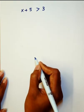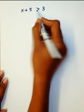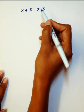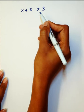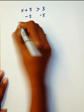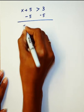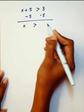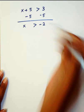If it was equal to here, how would you solve this equation? You apply the exact same rules. You would do, oh, I have to subtract 5 on both sides. So, you end up with x greater than negative 2. Awesome.